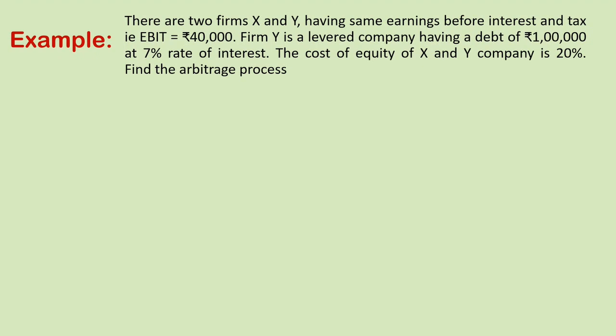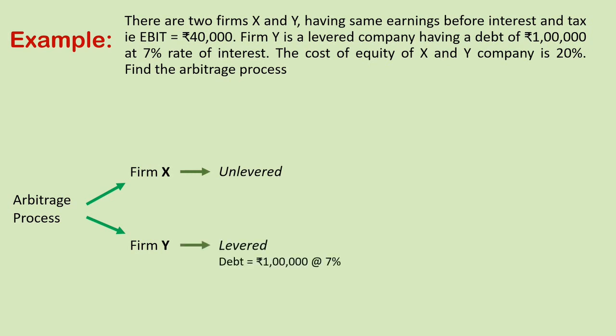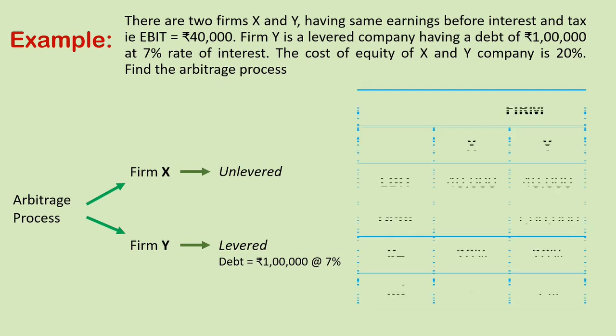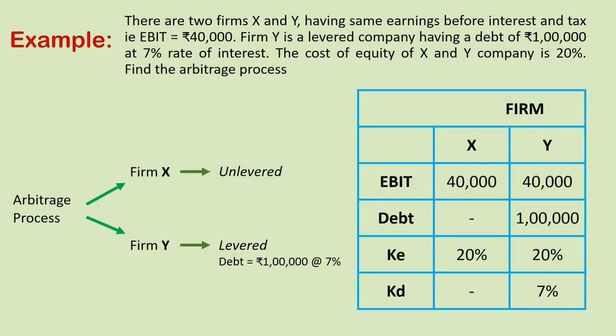Let us take an example — a case where the value of the levered firm is more than the value of the unlevered firm. The MM approach says that when such is the case, there will be an arbitrage process wherein the value of the levered firm will come down and the value of the unlevered firm will go up to reach an equilibrium point. In the given example, firm X is unlevered and firm Y is a levered firm having a debt of rupees 1 lakh at 7%. The EBIT of both firms X and Y is rupees 40,000.